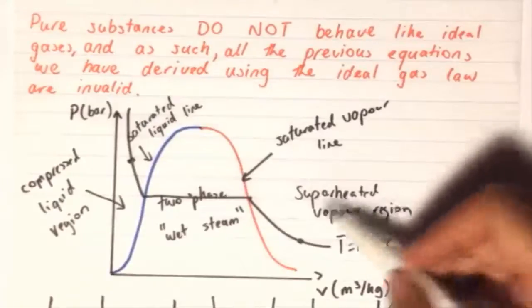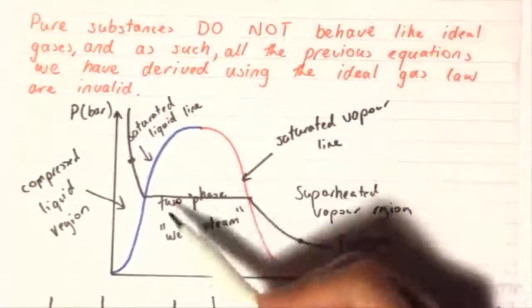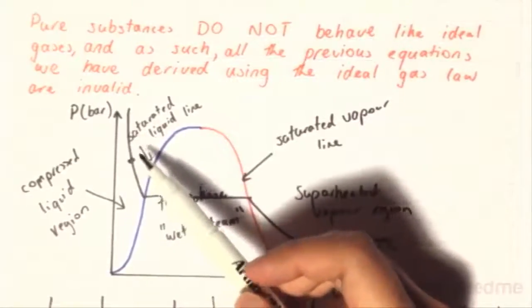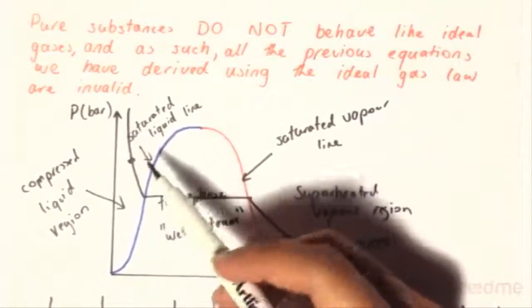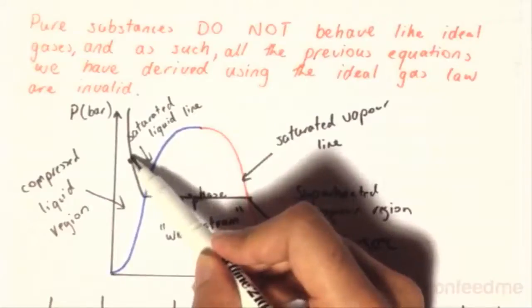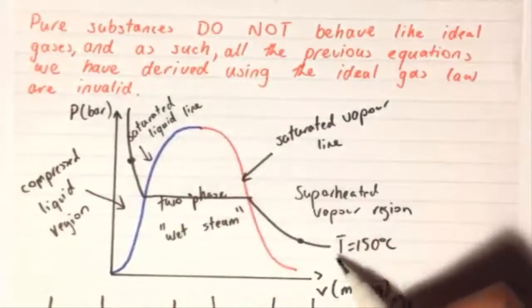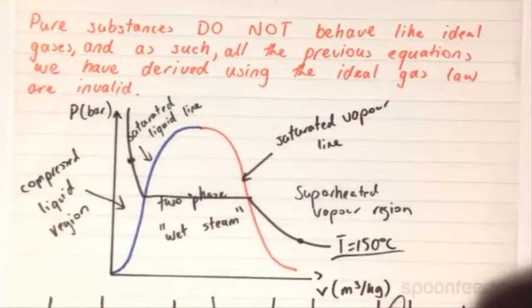So if it's a superheated vapor, or if it's a wet steam, or if it's a saturated liquid, also if it's a compressed liquid, then if it exists on this line, then we have the given temperature, which is T equals 150 degrees Celsius.